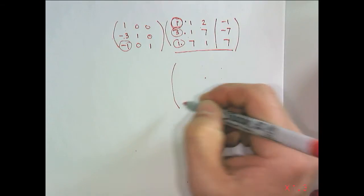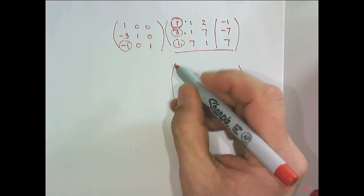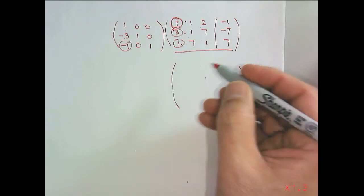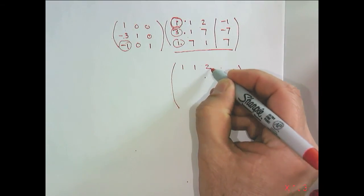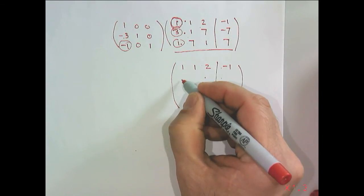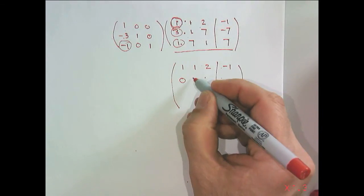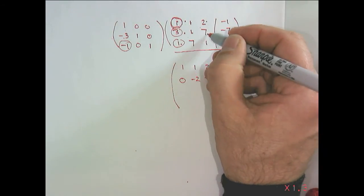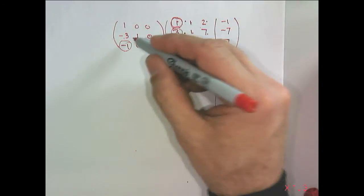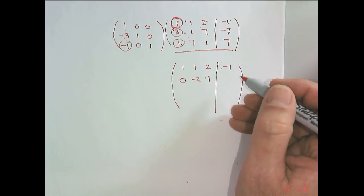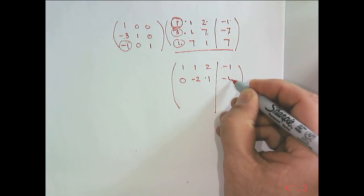So the net result then is, now you don't actually want to do the entire multiplication, you simply want to recognize what the net result is, and you see that this term becomes a zero. Minus 3 times that plus that is minus 2. Minus 3 times that plus that is 1. Minus 3 times that plus that is minus 4.